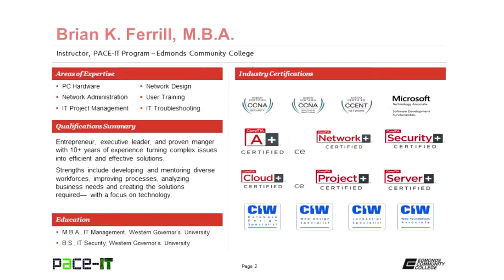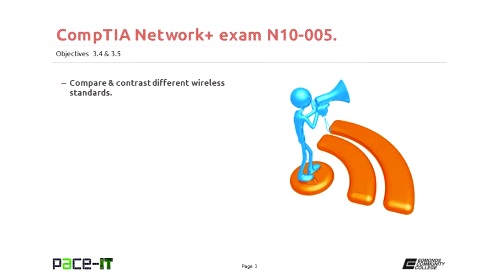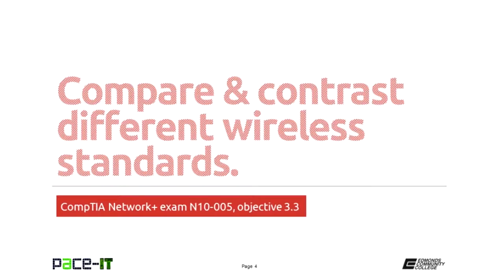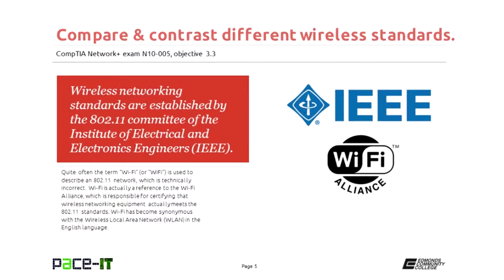With that, let's go ahead and move forward. Exam objective 3.3 is to compare and contrast different wireless standards, and that's what we will be covering this evening. So let's go ahead and jump in on tonight's webinar. We're going to be comparing and contrasting different wireless standards, but before we begin, let's talk about wireless networking a little bit.